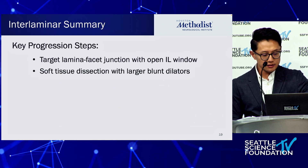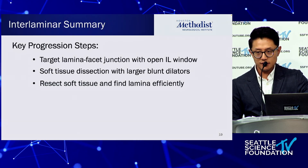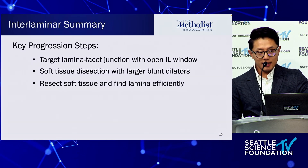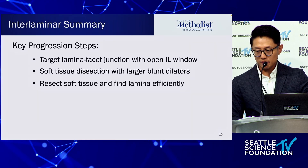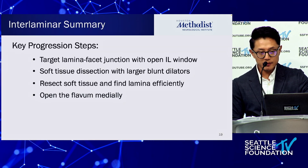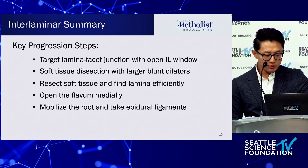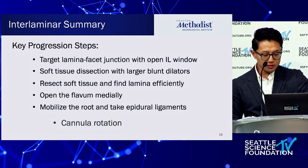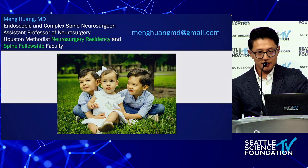Key progression steps: target the laminar-facet junction with an open interlaminar window, which requires a little caudal C-arm tilting. Do soft tissue dissection with blunt dilators so there's less muscle when you bring your scope in. Find that lamina efficiently — bone is your first anatomic landmark. Open the ligamentum flavum medially so it's easier to resect laterally. Then mobilize the root, release the epidural ligaments, and rotate the nerve root out of the way. That's it.